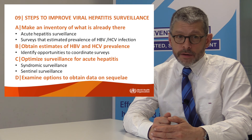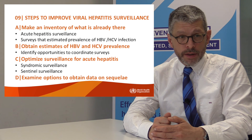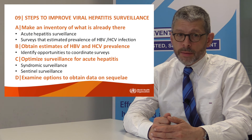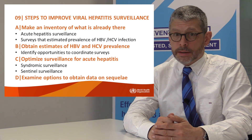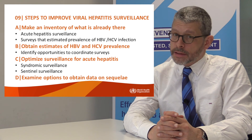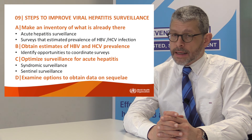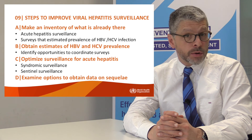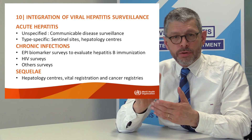One needs to identify opportunities to coordinate these surveys, for example with HIV or DHS surveys. Third, we need to improve or optimize surveillance for acute hepatitis. This may include syndromic surveillance for acute hepatitis to detect outbreaks, or sentinel surveillance for type-specific acute viral hepatitis. Fourth, a country may want to consider establishing a surveillance system for sequelae, including cirrhosis and hepatocellular carcinoma.